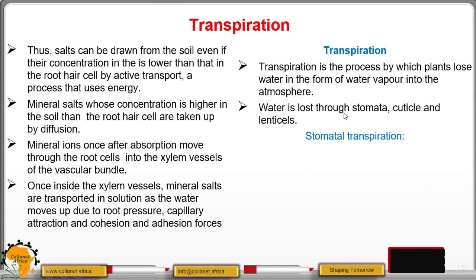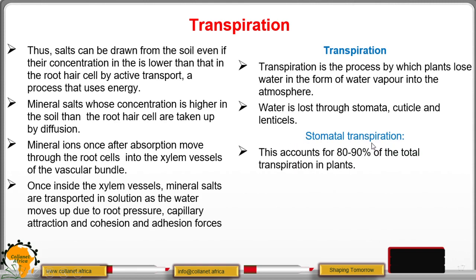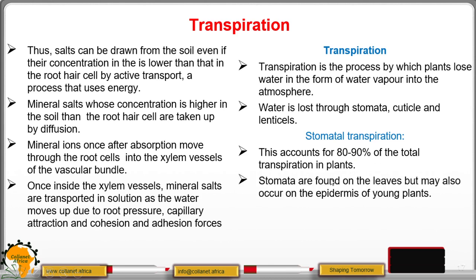That gives us three types of transpiration. First, stomatal transpiration, which accounts for up to 80 to 90% of the total water loss in plants. Stomata are found on the leaves but may also occur on the epidermis of young plants.